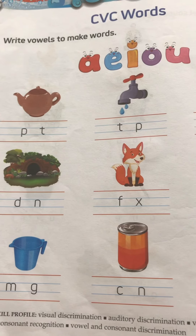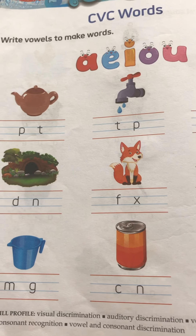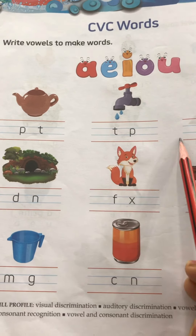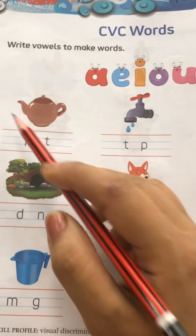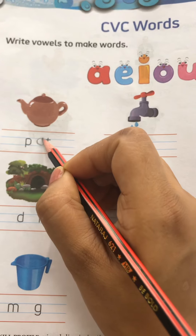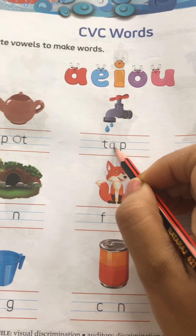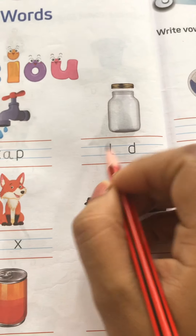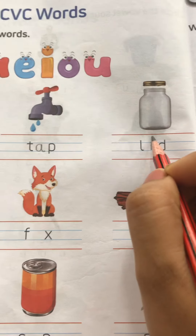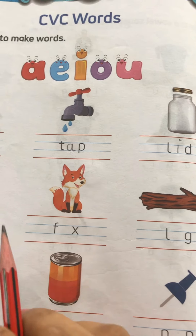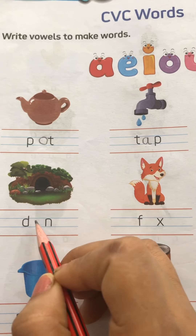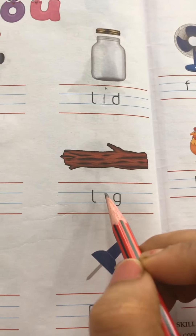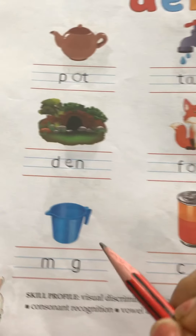With this activity you will be able to recognize vowels as well as consonants. The letters written in between are vowels and the letters already written are consonants. For example: P-O-T is 'pot', T-A-P is 'tap', L-I-D is 'lid', F-O-X is 'fox', L-O-G is 'log', M-U-G is 'mug', D-E-N is 'den'.